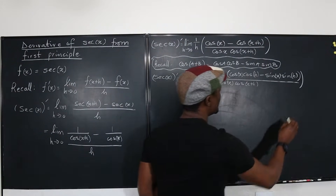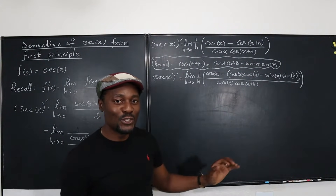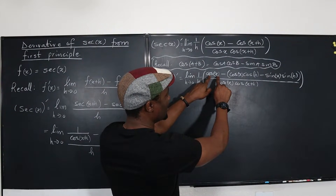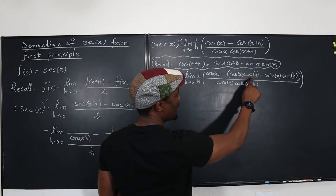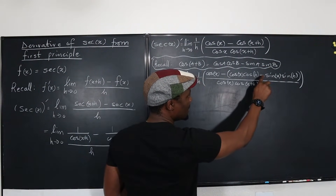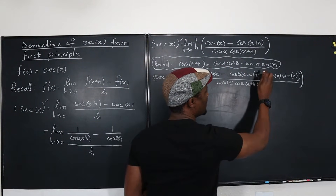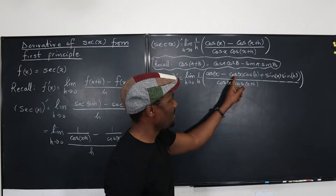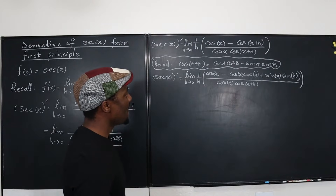Distributing the negative sign in the numerator: cosine(x) minus cosine(x)cosine(h) plus sine(x)sine(h). When you distribute the negative, the minus cosine(x)cosine(h) stays negative, and the double negative on sine(x)sine(h) becomes positive. So those are the two terms we have in the numerator now.